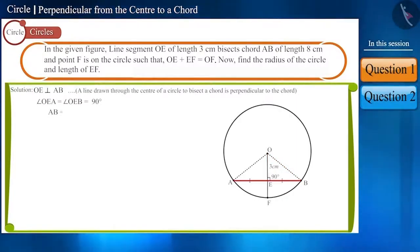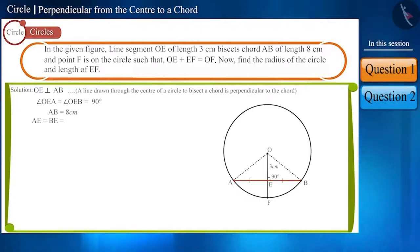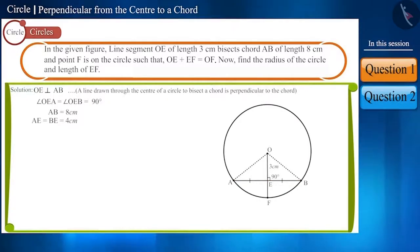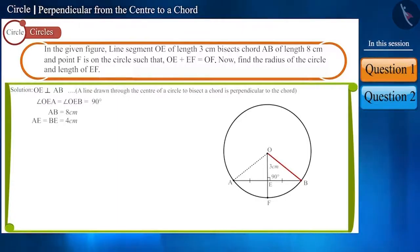We are given the length of AB as 8 cm, and E is its midpoint. That is, AE and BE are equal. Therefore, their length will be 4 cm. Now, by using the Pythagoras theorem in either of the two triangles, we can find the radius of the circle.